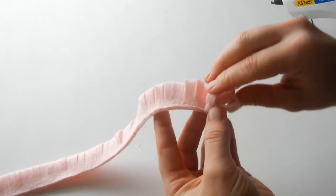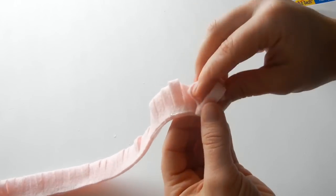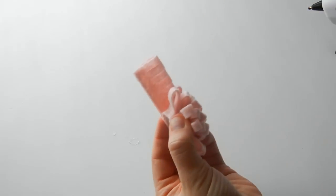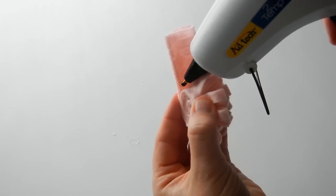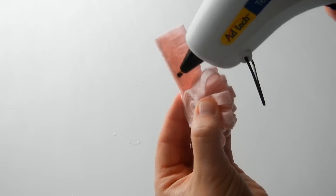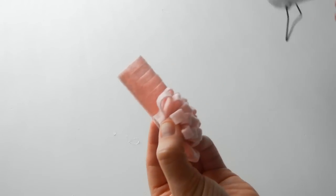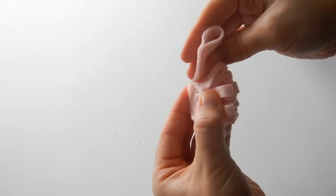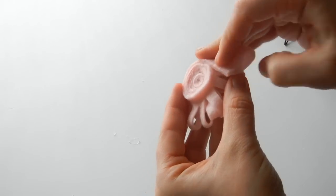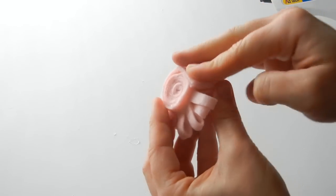We're just adding some more hot glue and continuing our rolling. We're getting to the end and you just place hot glue along the rest of it and just place it like so.